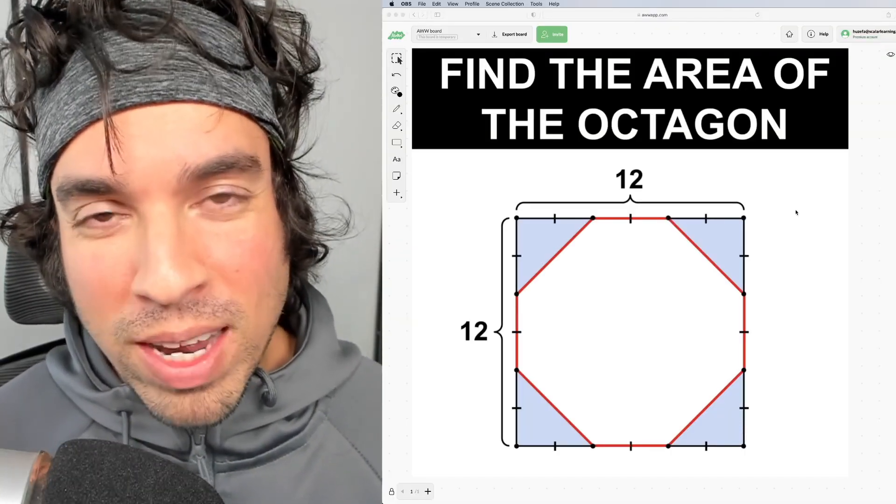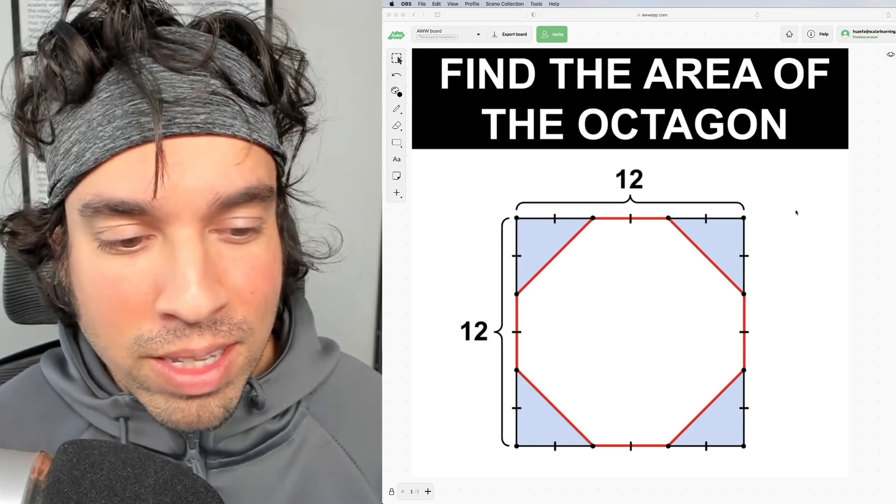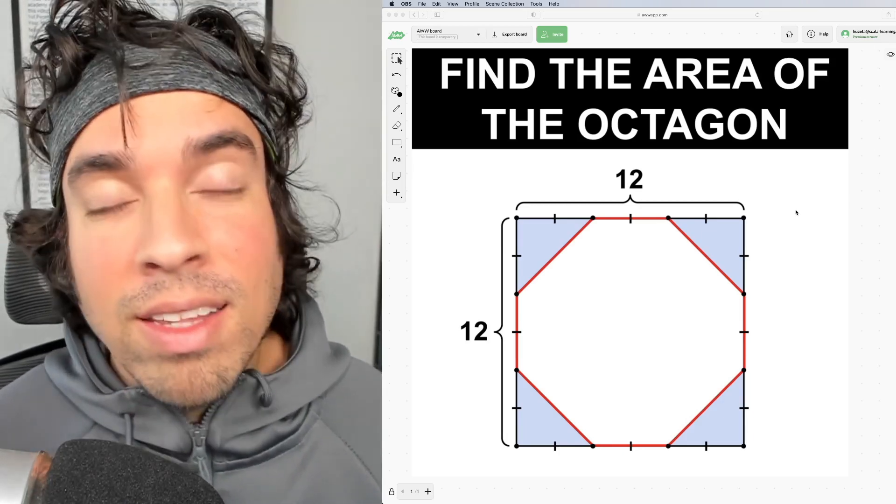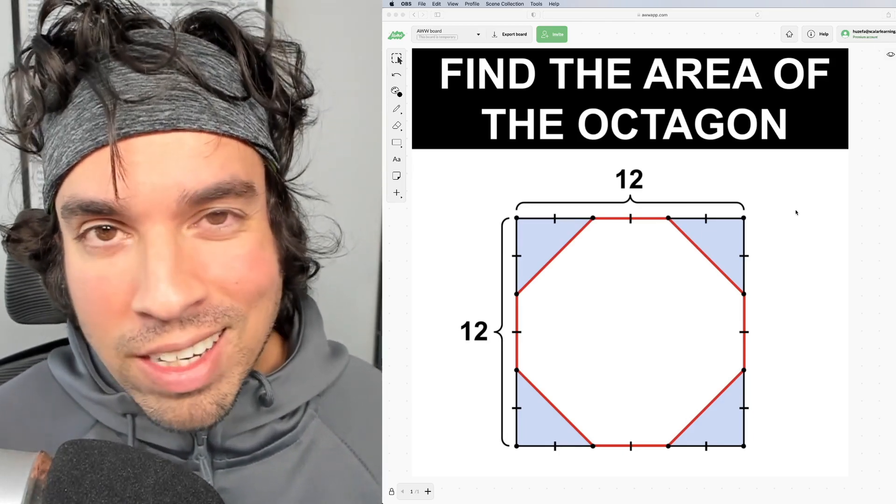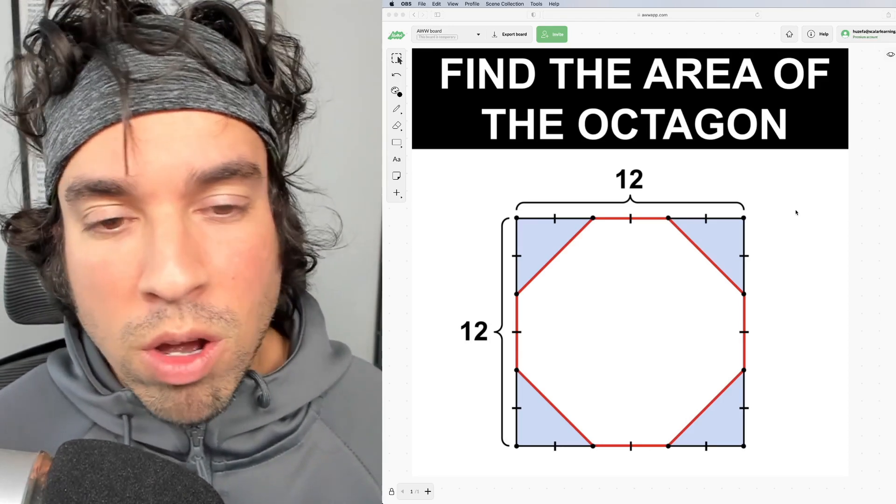What's up everybody and welcome back to another math puzzle. This one asks to find the area of the octagon. Notice that the octagon is essentially cut out of an existing square, which is a 12 by 12 square.